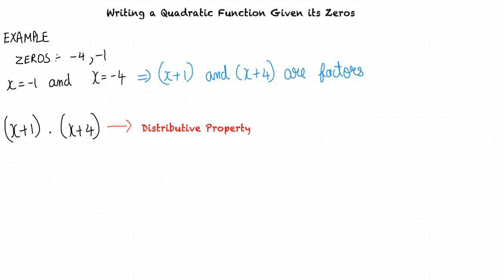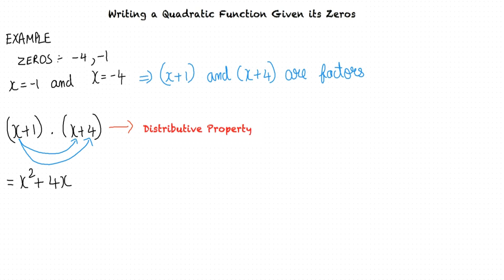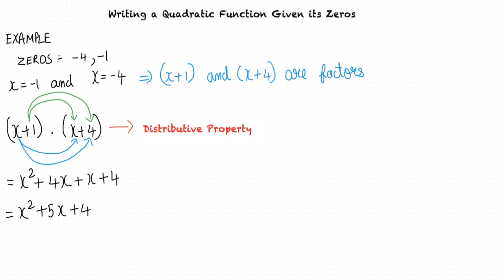We obtain the quadratic function by applying the distributive property to x plus 4 times x plus 1. Multiplying x by x and then x by 4, we get x squared plus 4x. Then multiplying x by 1 and 4 by 1, we get x plus 4. Simplifying, the quadratic function whose zeros are negative 4 and negative 1 is x squared plus 5x plus 4.